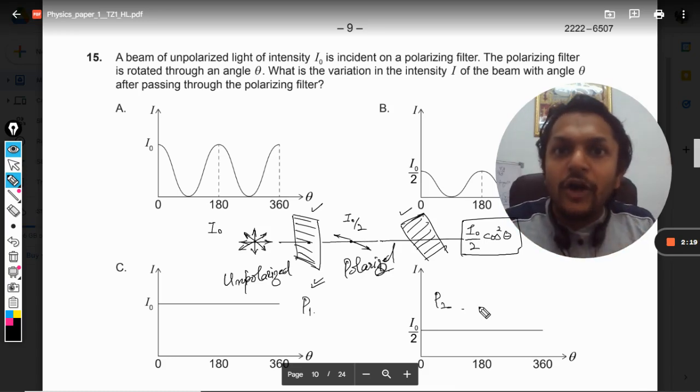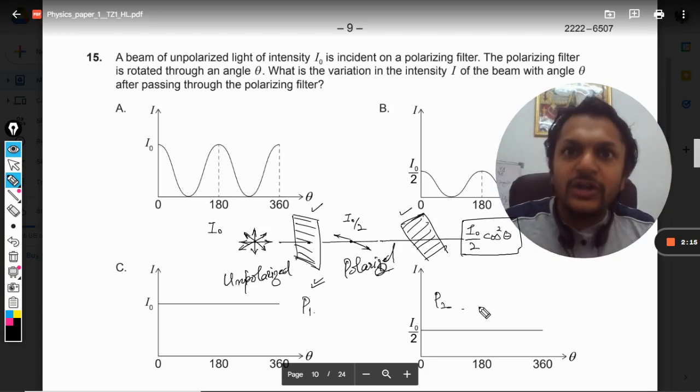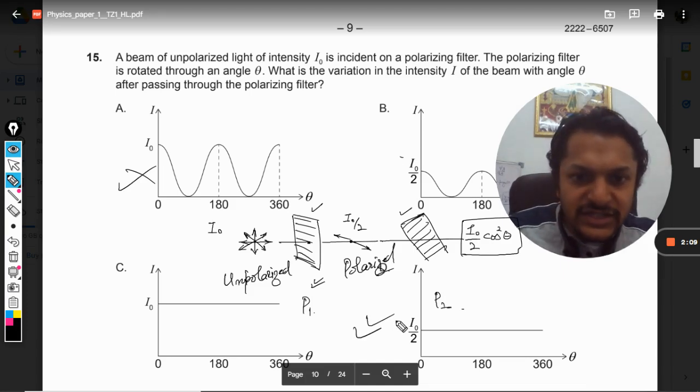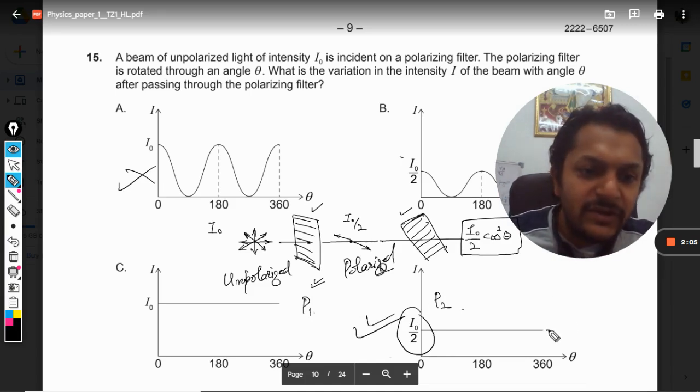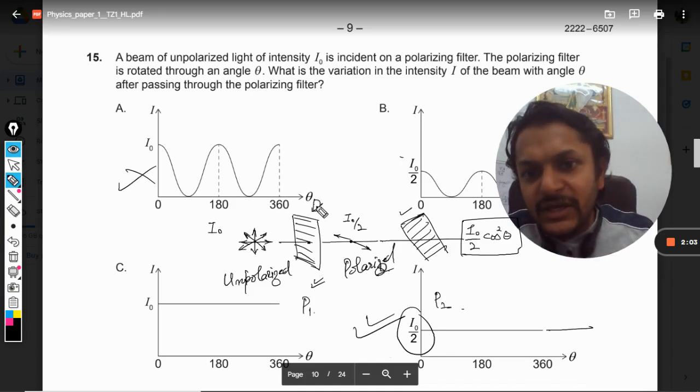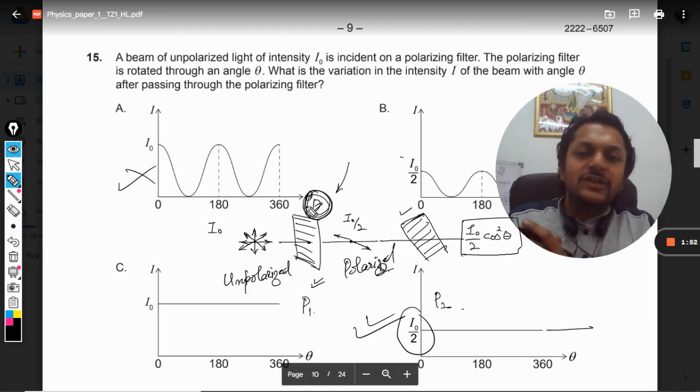So there is no question of Malus's law, no question of cosine square θ, so these kinds of graphs are not possible. The answer will be D, in which the intensity is given as I₀/2 and it will be constant whatever be the angle for the first polaroid, because that doesn't matter. The intensity will be I₀/2, so the answer to this question will be D.